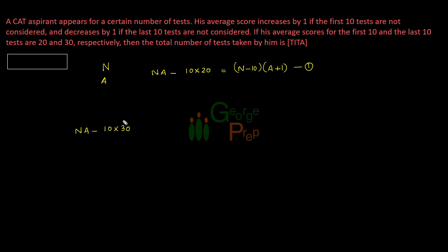Then what is the new sum in that case? The new sum is number of tests times average. Number of tests is N minus 10 because N was original from that we are not considering last 10. And the average decreases by 1. So average becomes initial average minus 1. These are the two equations we have to work with.